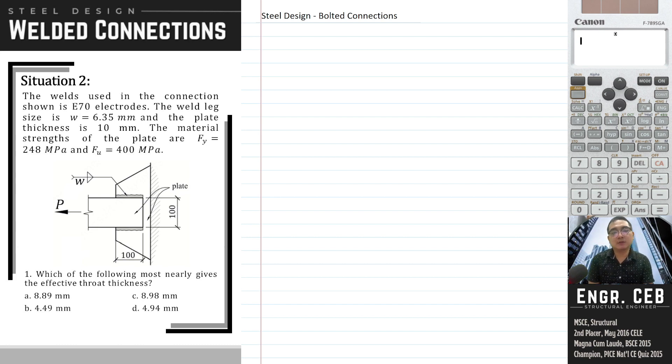Which of the following most nearly gives the effective throat thickness? When we say effective throat thickness, that is 0.707 of the weld size. Let us substitute: 0.707 times the weld size which is 6.35, we have 4.48945 millimeters and that is letter B.